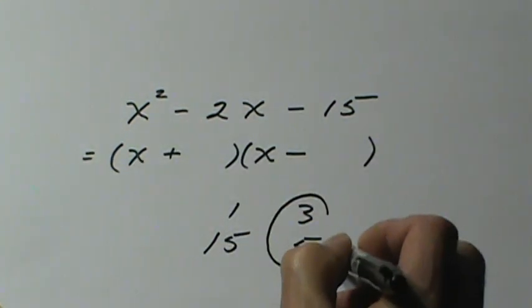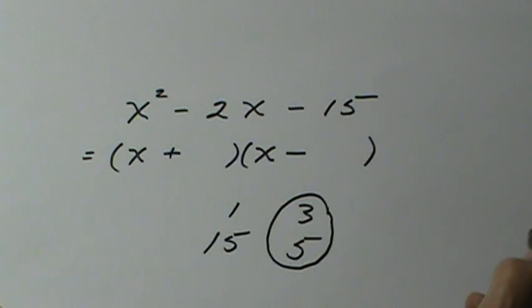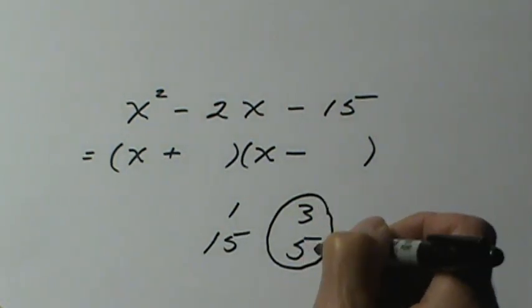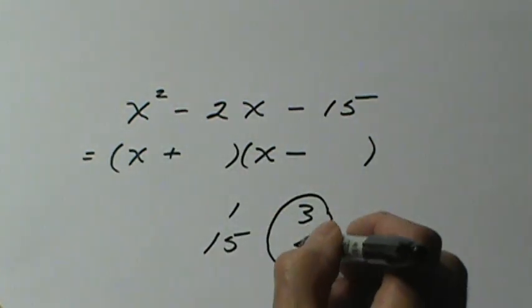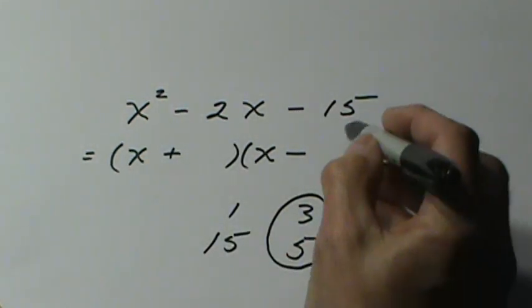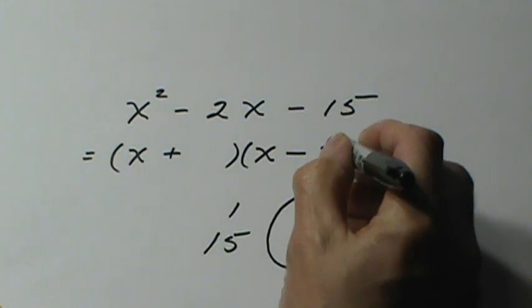This time because the signs are different we need a difference of 2, so I select the 3 and the 5. Again, because the signs are different I have to be careful where I put the numbers. The minus sign in the middle tells me that the larger number, the 5, should get the minus sign in the bracket.